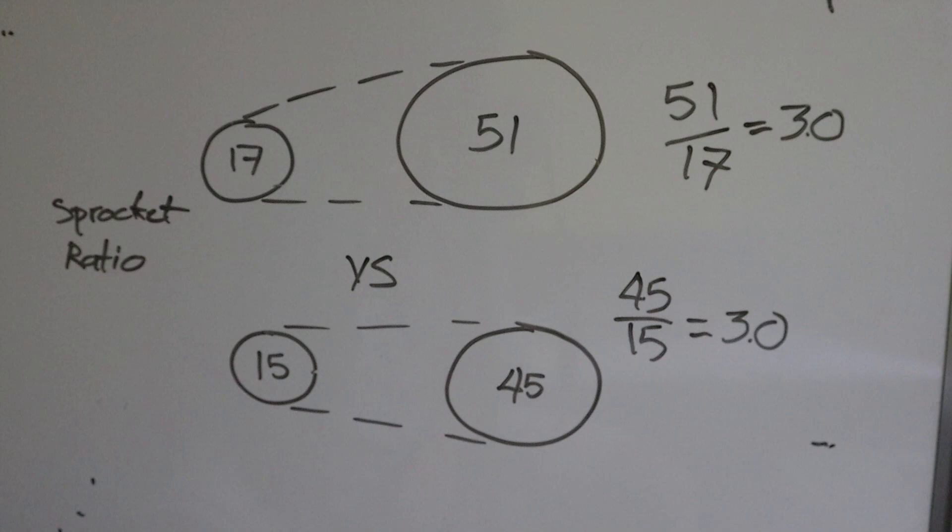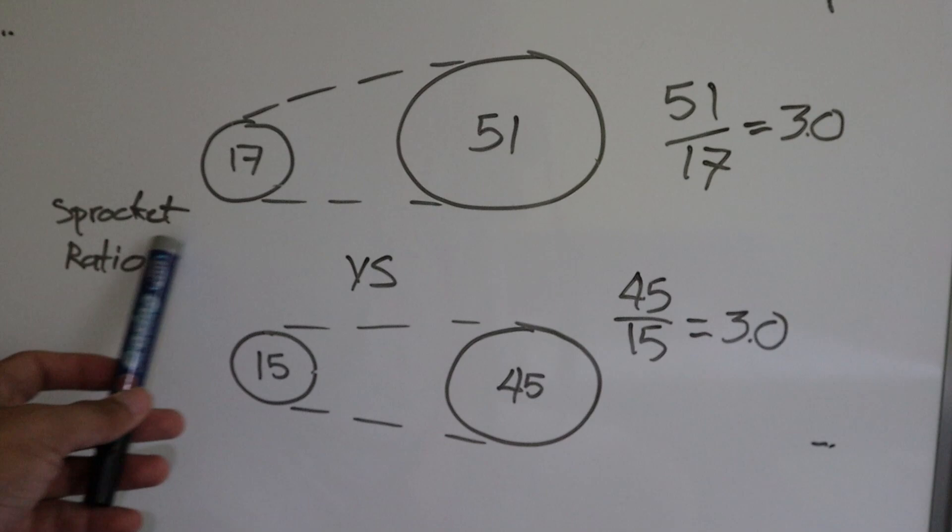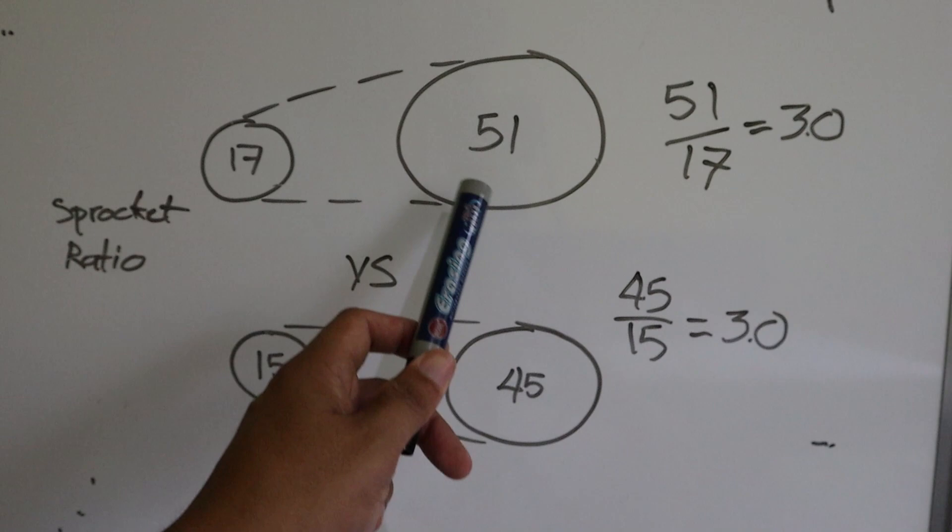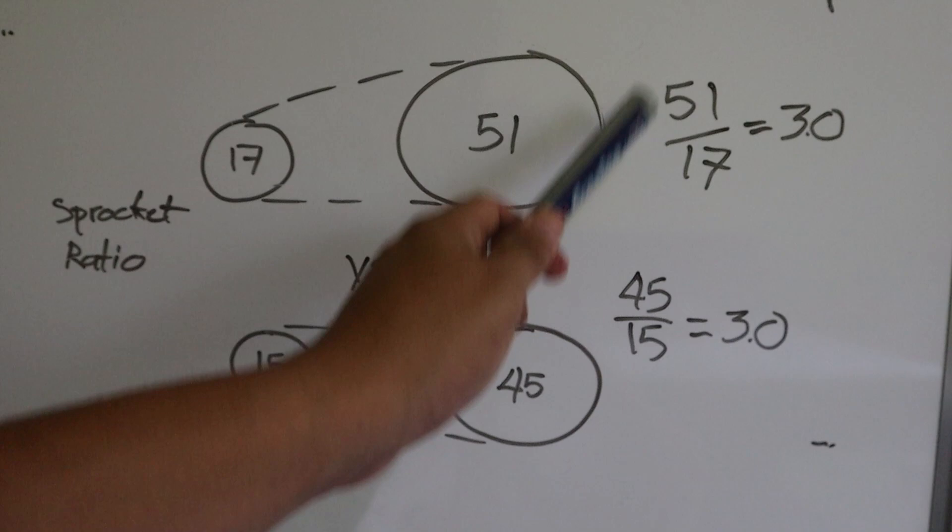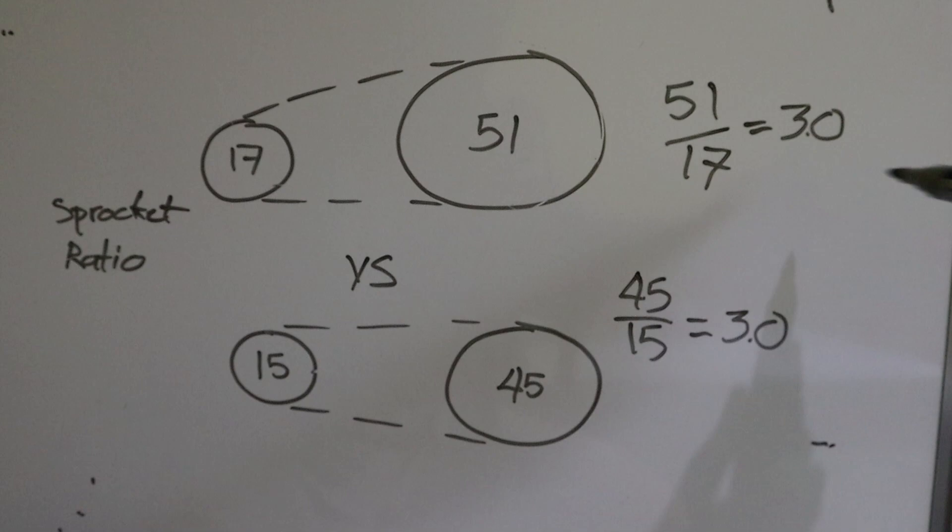Ipaliwanag muna natin na short background kung ano yung sprocket ratio. Sa pagkuhan ng sprocket ratio, kunin lamang natin ang bilang ng ngipin ng ating malaking sprocket at i-divide ito sa bilang ng ngipin ng ating mas maliit na sprocket. Ito yung ating example: 51 divided by 17, makakuha natin ang 3.0 ratio.